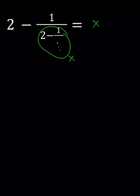So we get an equation: 2 minus 1 over x equals x. Let's multiply both sides by x. 2x minus 1 equals x squared. Let's put everything on the same side.